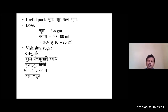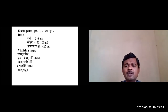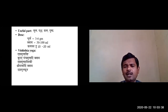Regarding Matra — dosages: Churna is around 3 to 6 gram. Kvatha is 50 to 100 ml. And Phala Rasa is around 10 to 20 ml.